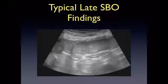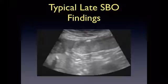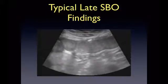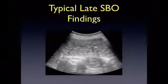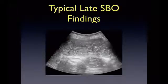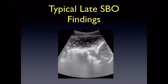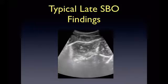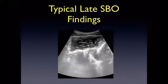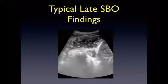This is another video clip showing the to-and-fro movement within the small bowel. In late SBO, the bowel contents will become more hyperechoic within the dilated loops, as demonstrated in this video clip. This is another image of late SBO with hyperechoic densities within dilated bowel; this loop measures approximately 40 mm. This video clip demonstrates the late SBO findings of hyperechoic densities within dilated loops of bowel.